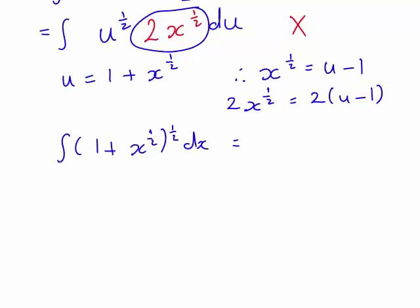So now we can see that the original expression we were wanting to replace in terms of u and du, which was the integral of 1 plus x to the half, raised to the power of half with respect to x, it's now going to be the integral of u to the half times 2(u minus 1) du. So that now makes sense, that is now an expression we can integrate.